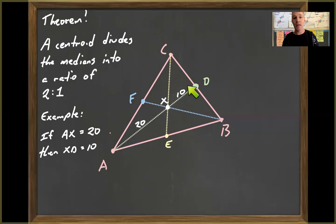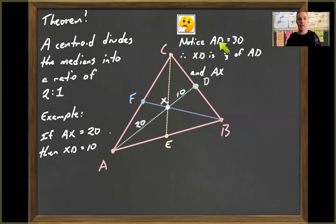So it could be like 20 to 10. Think about this though. Like if there's two parts over here and one part over here, there's actually three parts in all. So notice AD equals 30, right? The whole median here has a length of 30. So therefore, that's what these three dots mean. XD, this length, this part of the median is actually only one third of the entire median. And AX is two thirds. So that's why we get this like two parts to one part. That's part to part where a fraction is actually part to whole.